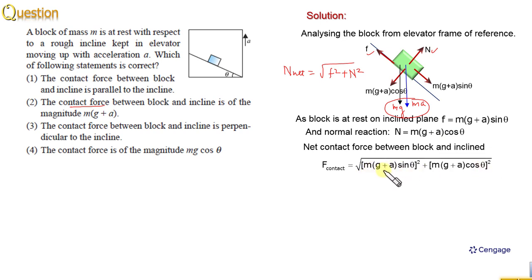Now, we can take mg plus A common here and here also. And this square we can take outside the under root. We can write mg plus A sin square theta plus cos square theta. Sin square theta plus cos square theta is equal to 1. That means f contact should be equal to mg plus A.